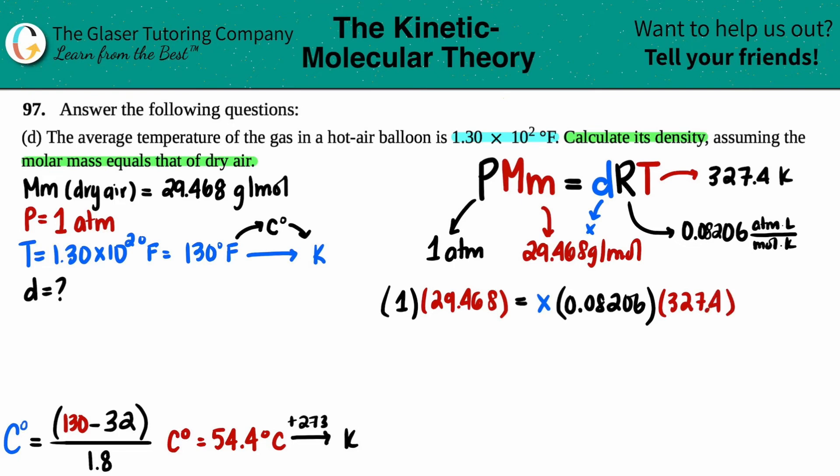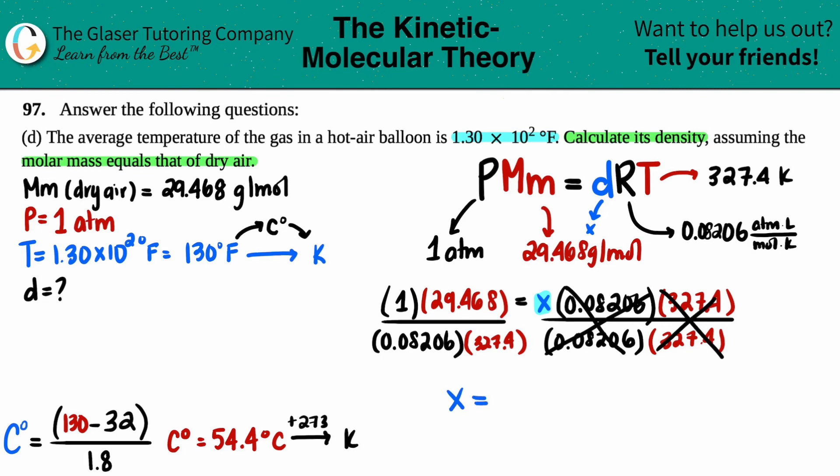And now we want to just solve for X. So what I'm going to do is I'm just going to pull over all the stuff and get rid of the X, right? So I'm going to divide each side by the 0.08206. That goes on this side, 8206. And then I'm also going to divide by the 327.4. You could also do this in multiple steps if you want, but just for simplicity sake, I'm just going to plug everything in, you know, in one shot on the calculator. And now we should get an X value. There we go.